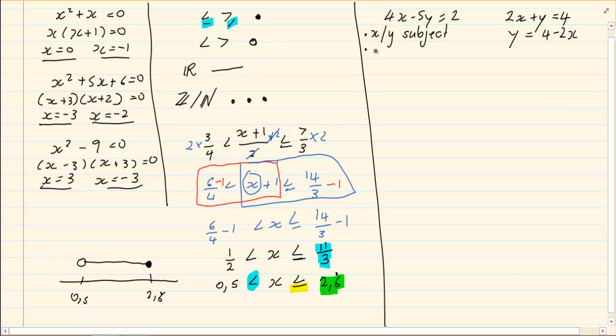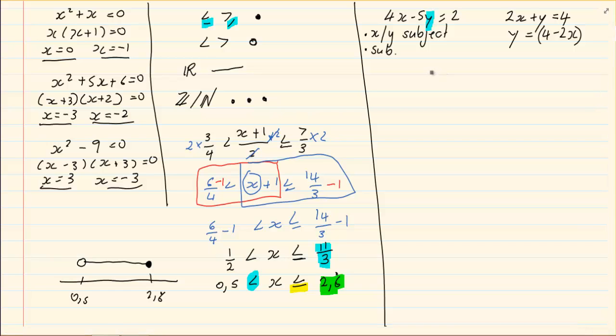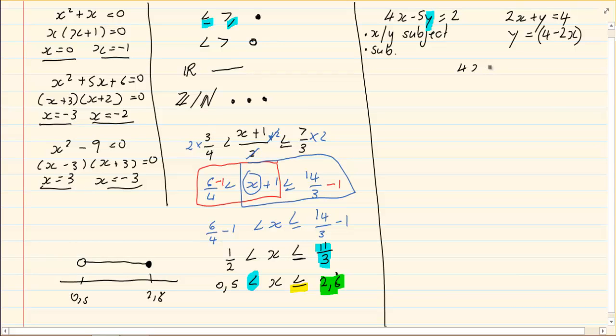Then we are going to substitute. So we are taking this 4 minus 2x and we are putting it in wherever there is a y in the second equation. So we have 4x minus 5y is equal to 2. We are taking this in the place of a y, so we are not going to write y anymore. We are going to have 4x minus 5 open brackets, in there I am putting 4 minus 2x. So I am taking out the y and I am replacing it with a substitution.